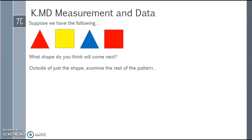Let's see if we have a large red triangle, a large yellow square, a large blue triangle, and a large red square — what shape do you think will come next? Outside of just the shape, also examine the rest of the pattern if you're struggling. Pause the video before moving on.